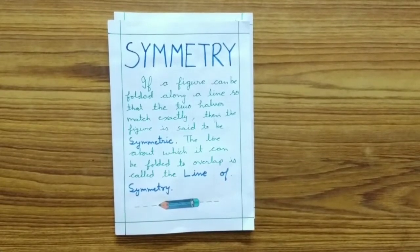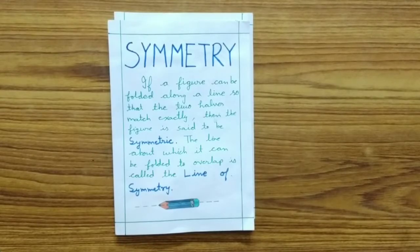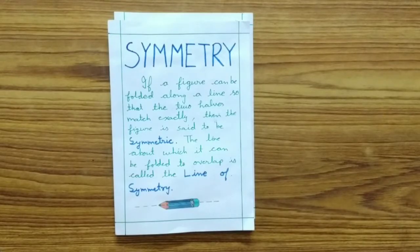In this video we are going to learn about line symmetry. If a figure can be folded along a line so that the two halves exactly match each other — when we fold about that line both the parts overlap each other — then that figure is said to be symmetric, and the line about which it can be folded is called the line of symmetry.